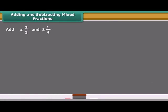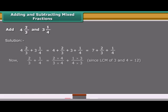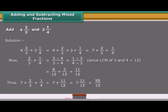Mixed fractions can be written either as a whole part plus a proper fraction, or entirely as an improper fraction. One way to add or subtract mixed fractions is to operate separately on the whole parts and fractional parts; the other way is to write the mixed fractions as improper fractions and then directly add or subtract them.